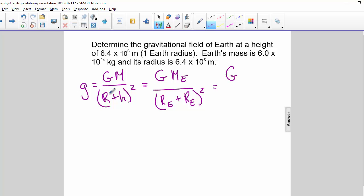So we get G times the mass of the Earth over 2 times the radius of the Earth, squared. So this becomes GM_E over 4r_E squared.